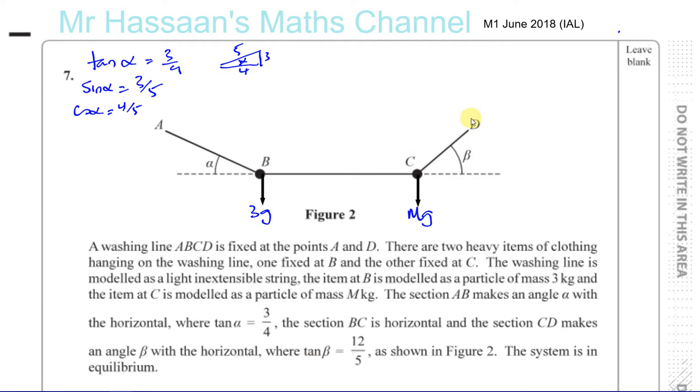And then it says that the section CD makes an angle beta with the horizontal, where tan of beta is 12 over 5. So if you have beta, this is 12 over 5. So this is 12 and this is 5. So that's 12, that's 5, that's 13. 5, 12, 13, triangle. 5 squared, 25 plus 144, 169 squared, 169 is 13. So we can say that we know the tan of beta is 12 over 5. That means the sine of beta is opposite over hypotenuse, 12 over 13. And the cosine of beta is 5 over 13. So that's the information that we have.